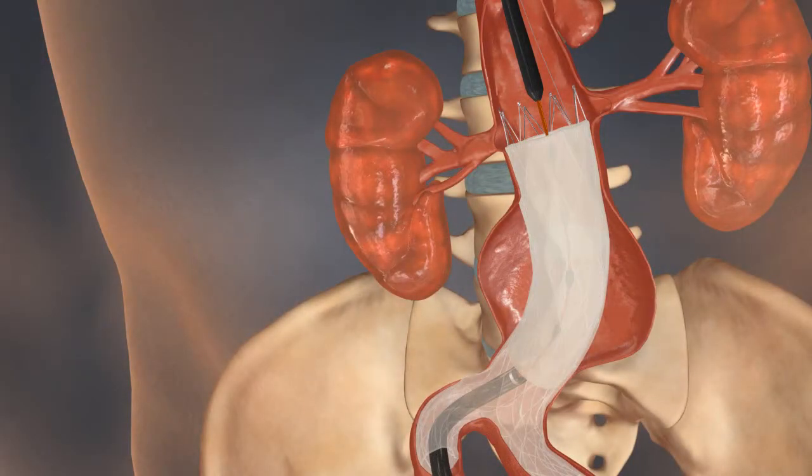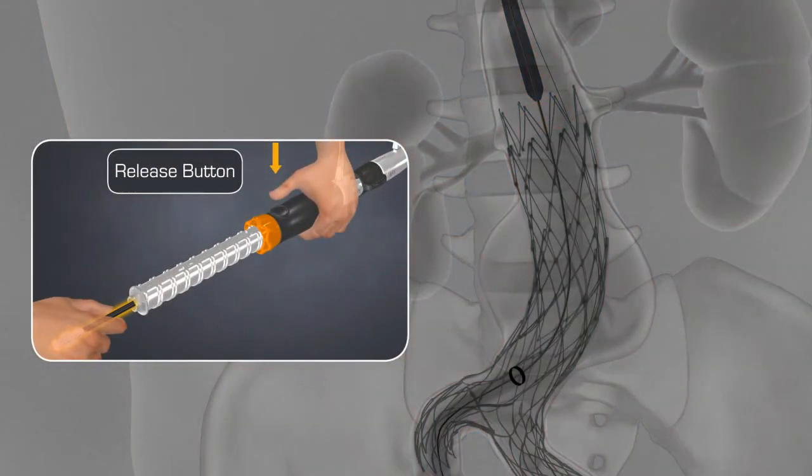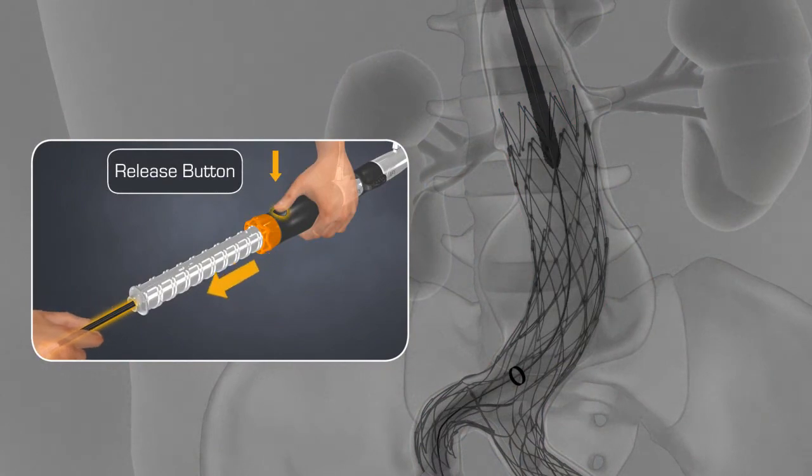After complete deployment of the aortic extension, press down on the release button and pull the inner core back in through the introducer sheath until it stops.